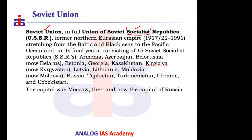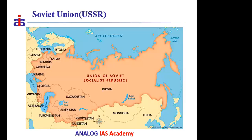At its peak, the Soviet Union had 15 member countries — eastern European, southern European, and northern Asian nations. Geographically, they spread across eastern and southern Europe and northern Asia. The capital was Moscow, which remains Russia's capital today. All 15 countries were part of the Soviet Union.